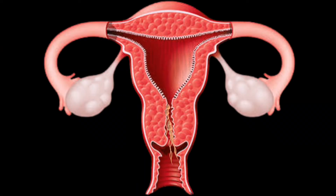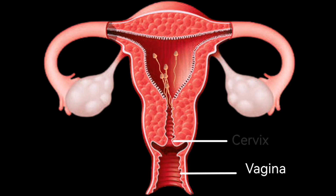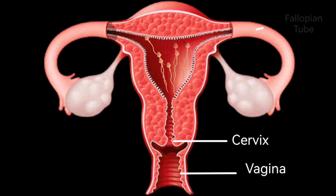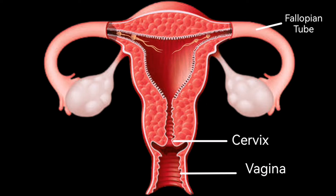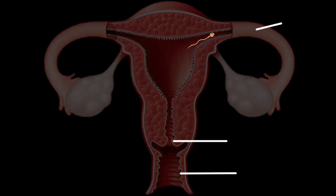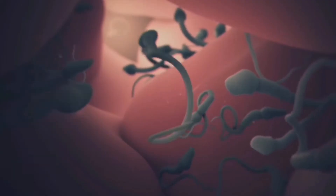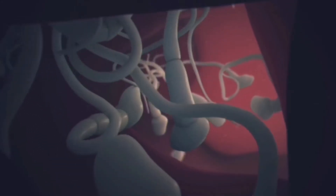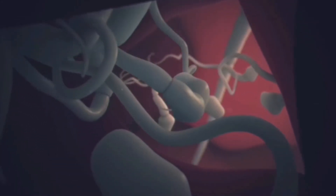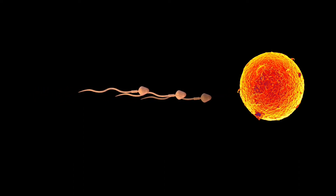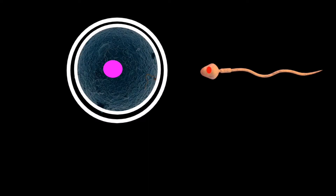The next step is for sperm cells to travel from the vagina, through the cervix, and into the fallopian tube where the egg is waiting. Sperm cells can survive in the female reproductive tract for up to five days, so it's not necessary for them to reach the egg immediately.